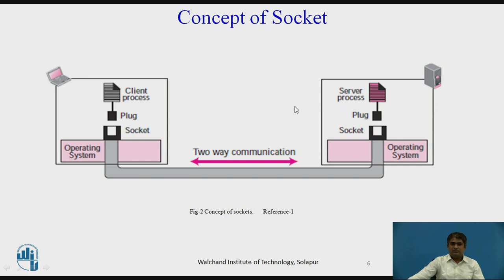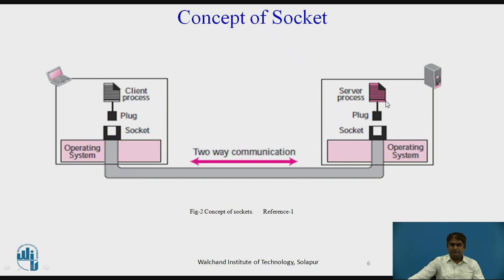To have a communication, an application program — either client or server — needs to request the operating system to create a socket. For data communication, a pair of sockets at each end is needed. You can see here a pair of sockets at the client side and a pair of sockets at the server side. For two-way communication, it is required at each end. This abstraction using socket and plug is similar to what we use in daily life, like a telephone — the telephone is connected into the socket so that it can communicate to the other end.